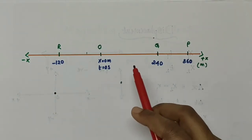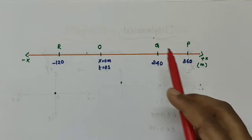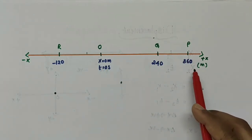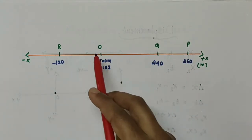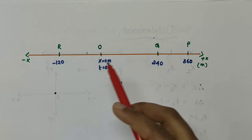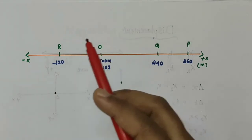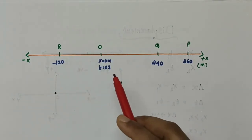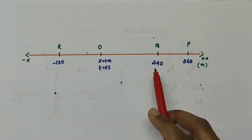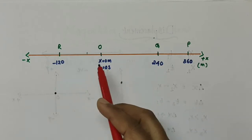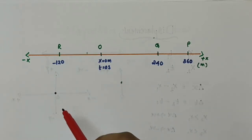The positions to the right of O are taken as positive, and positions to the left of O — the starting point — are taken as negative.